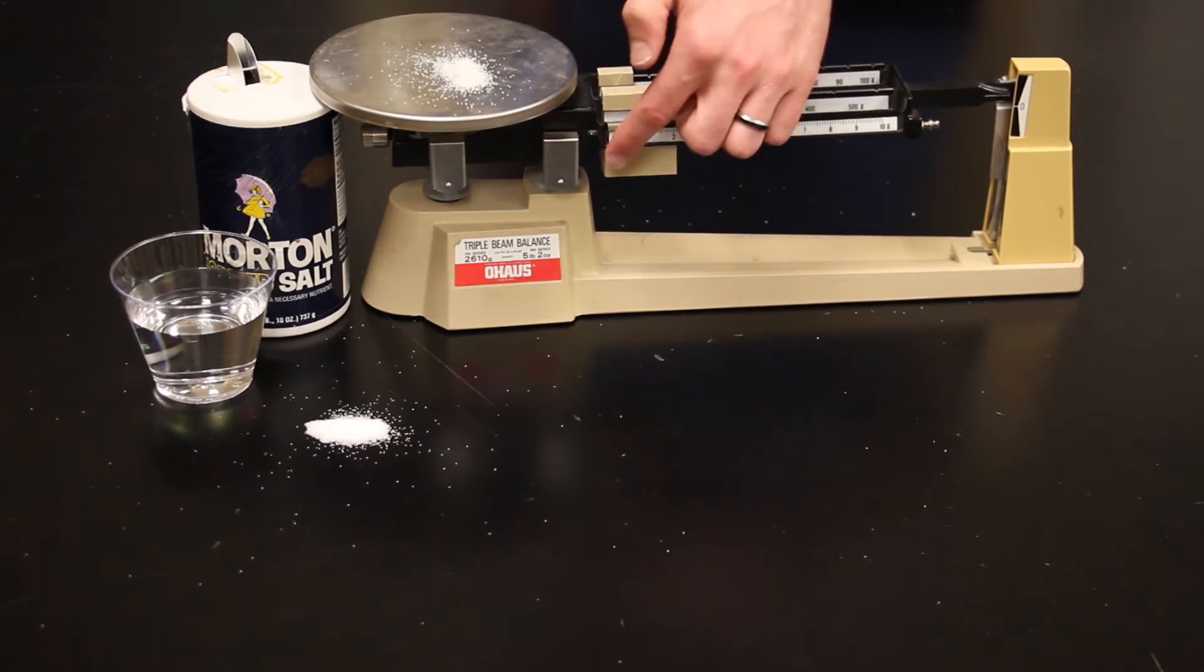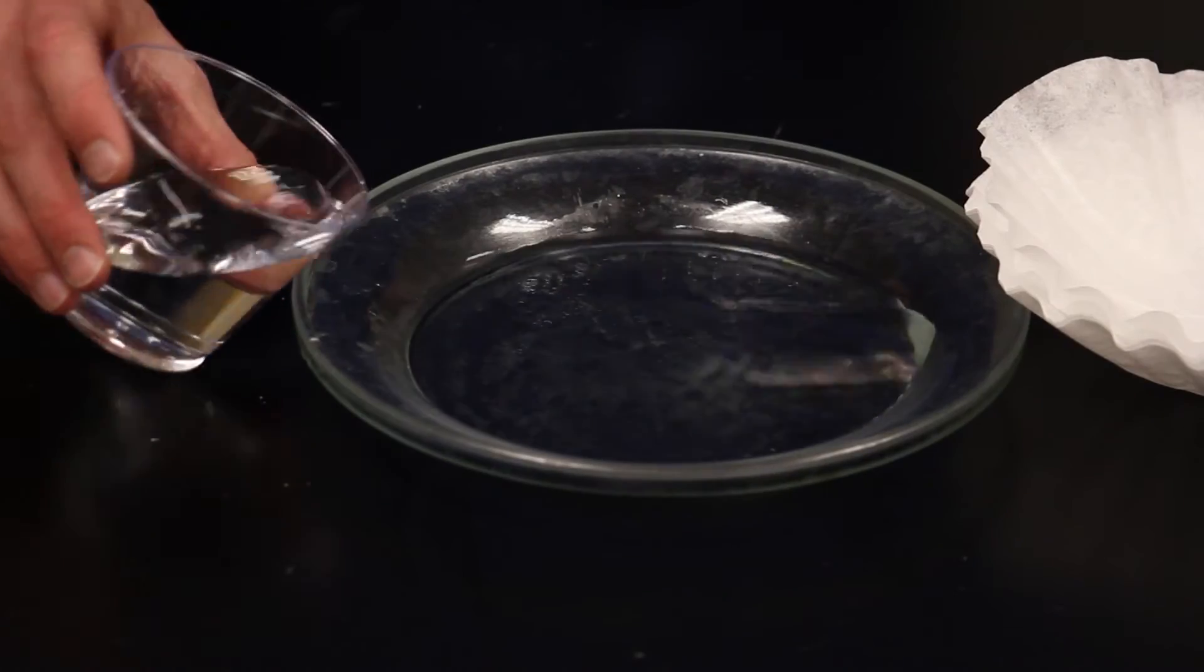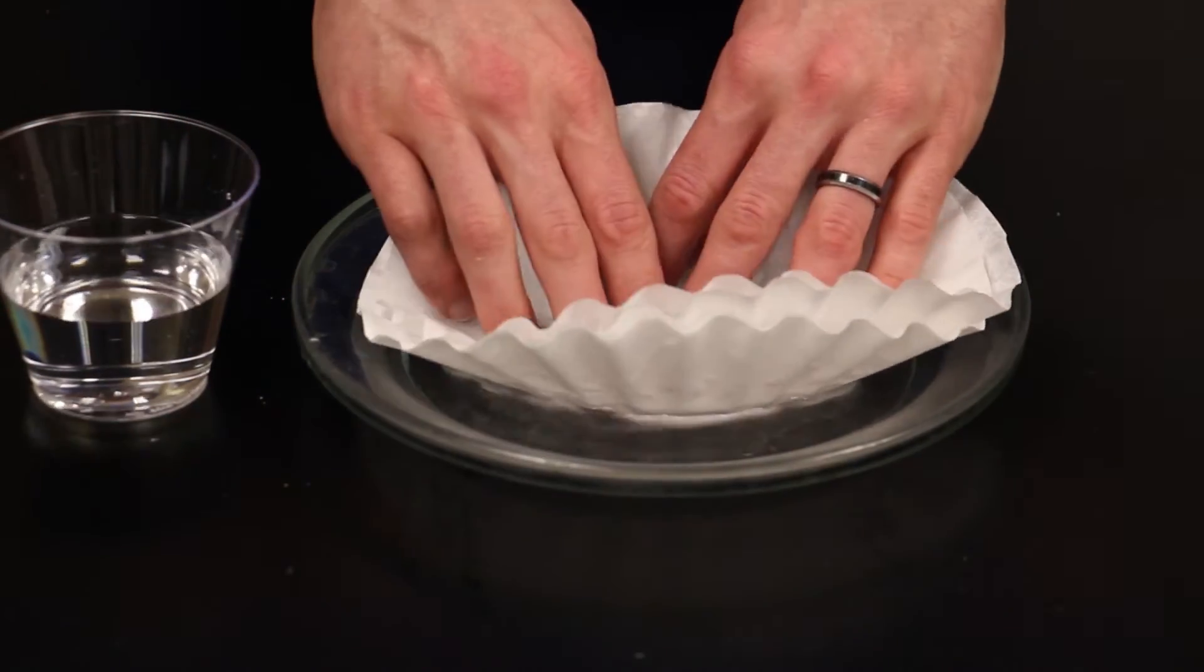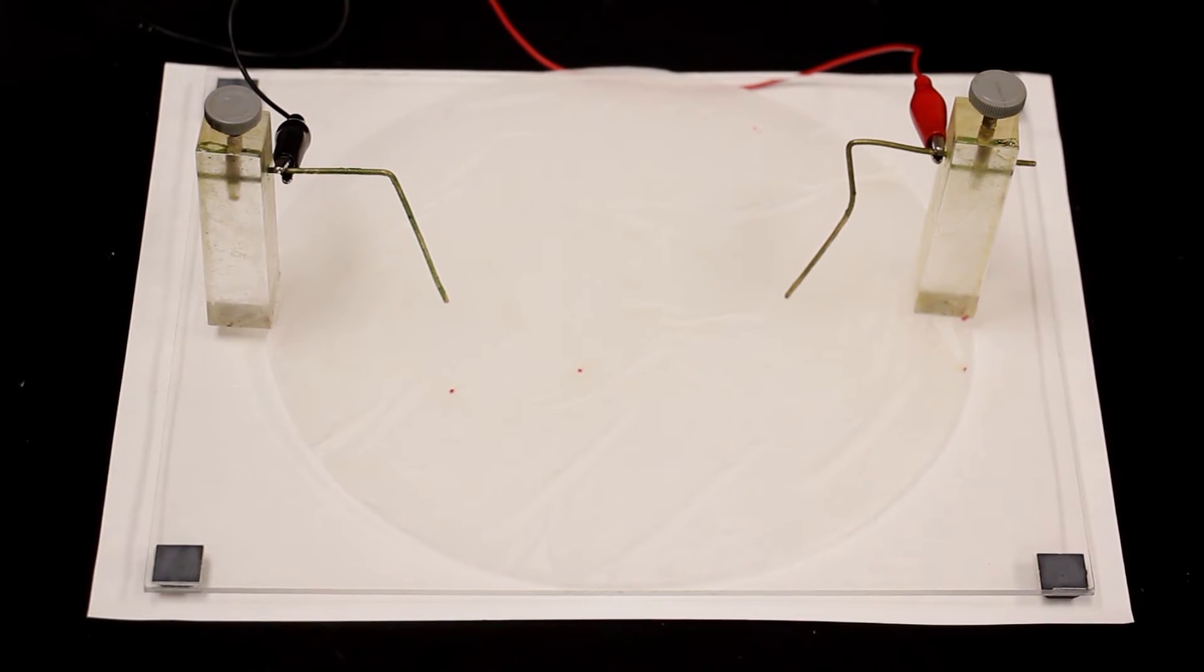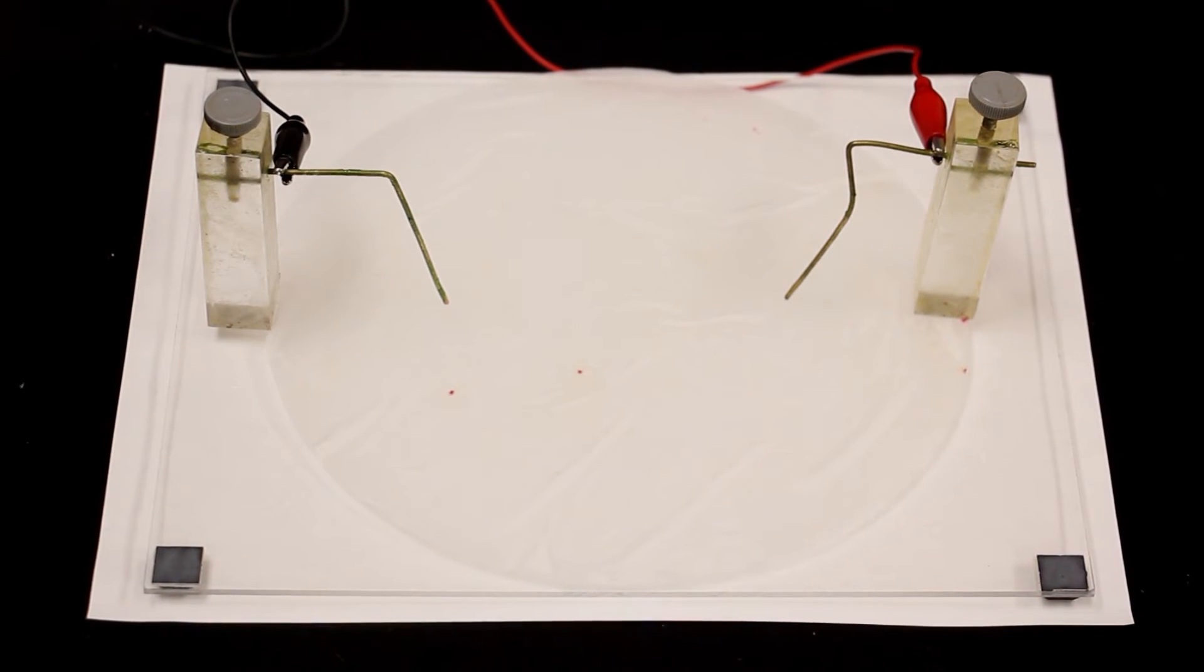Prepare a less than 1% salt water solution by mass and dampen some coffee filters in it. Then place them on a plastic insulator and put high voltage electrodes on it.